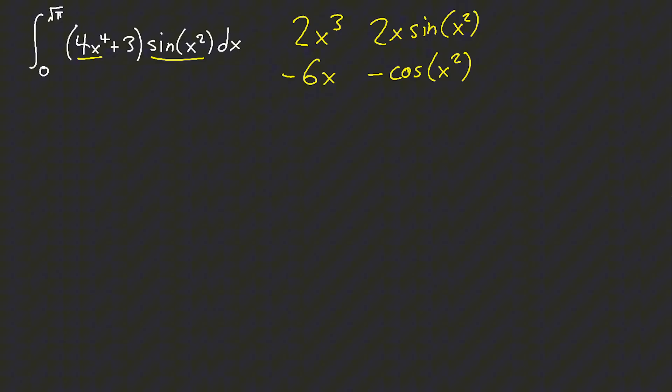And then, what about here? This case, I will derive sin(x²), and then integrate 3, and this way we get negative 2x cos(x²), and this is just 3x.